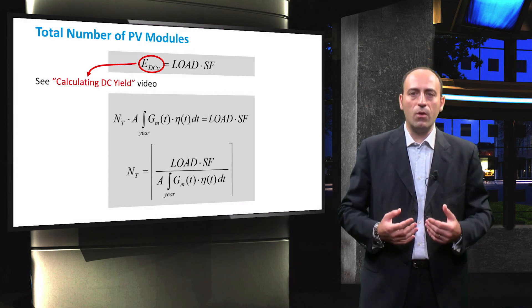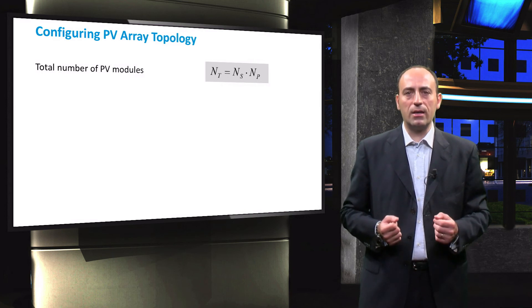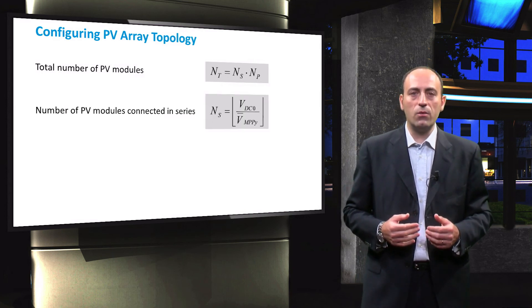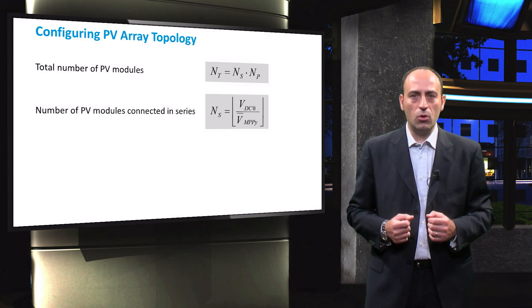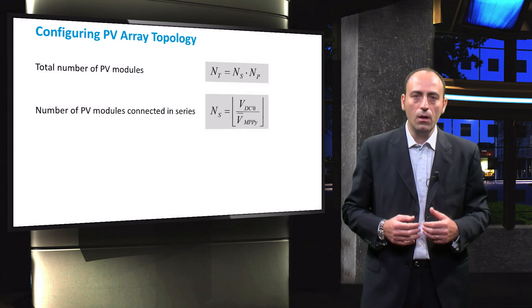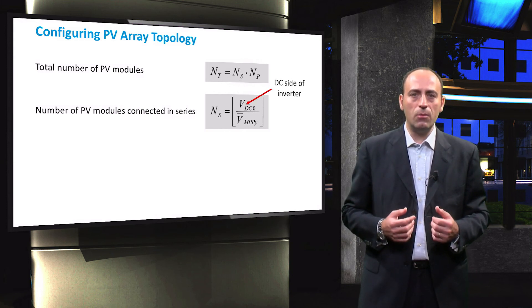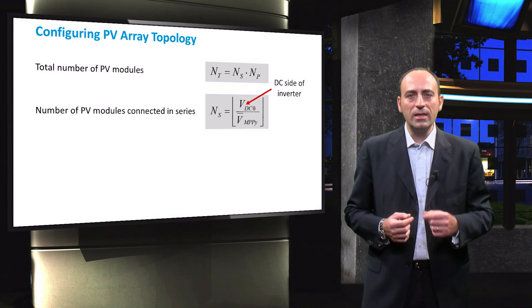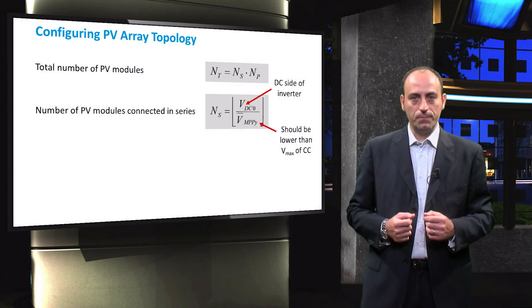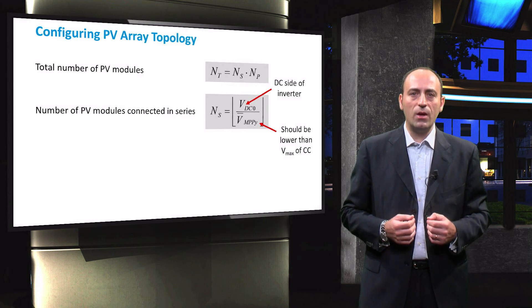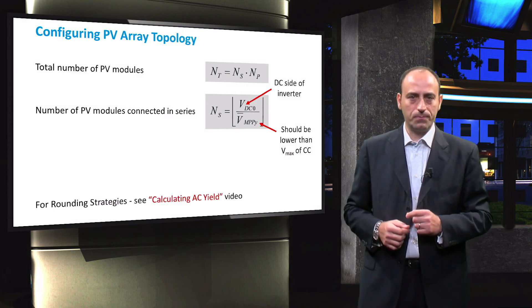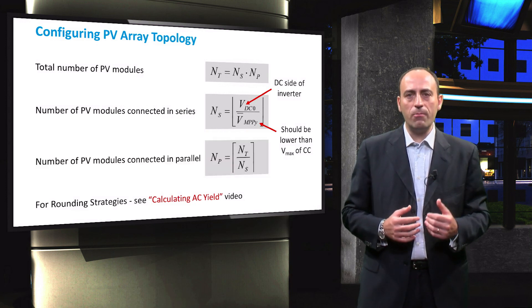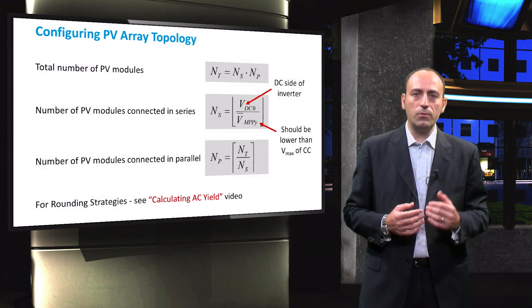Once the total number of PV modules required is determined, the number of modules in series and in parallel are calculated. The number of series-connected modules is calculated by dividing the nominal DC voltage of the inverter by the averaged maximum power point voltage of the PV module, as explained in the 'Calculating the DC Yield' video. You have to keep in mind that this averaged maximum power point voltage of the PV module should be smaller than the maximum voltage of the charge controller to avoid damage to the latter. The resulting value is rounded down to its nearest integer. Finally, the number of PV modules in parallel is determined by dividing the total number of PV modules by the number of PV modules in series, with the resulting value rounded up to the nearest integer.